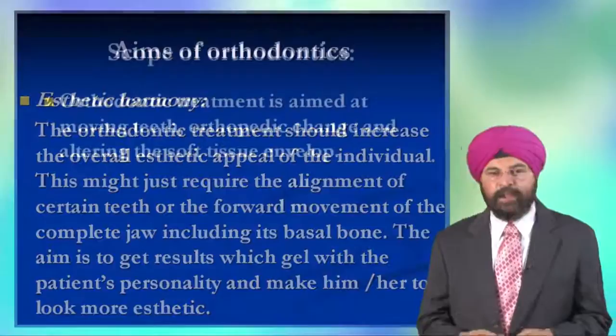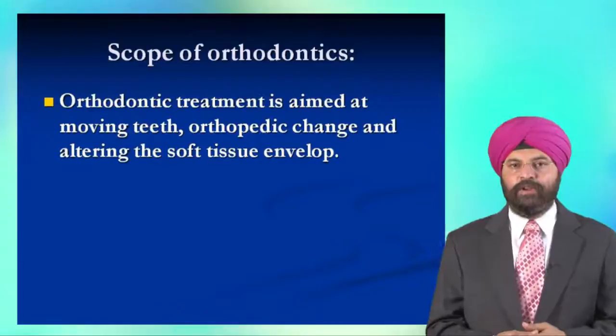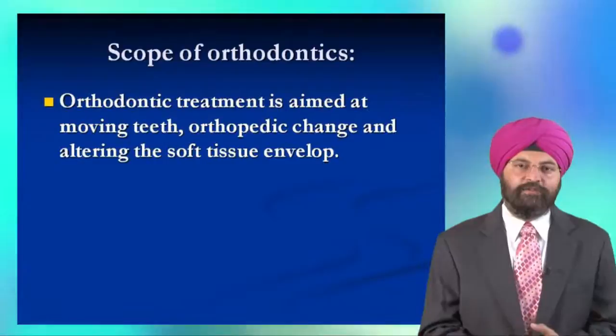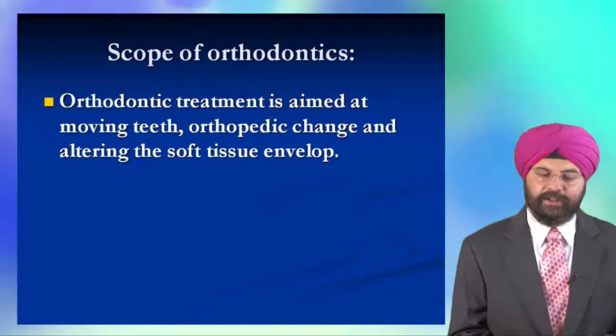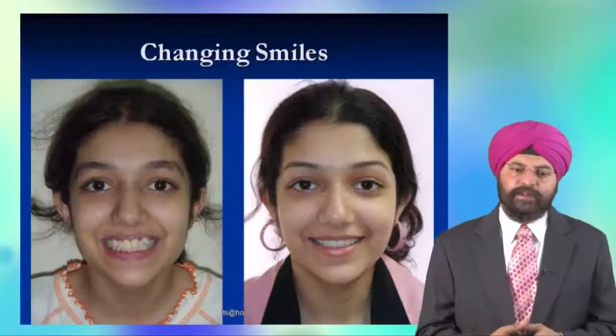The next thing is the scope of orthodontics. Orthodontic treatment is aimed at moving teeth, achieving orthopedic change, and altering the soft tissue envelope. This has to be done together — it is not a singular thing. So don't think that if you move teeth there will be no change in the smile. There will be a change in the smile. If you move jaws, there will be change in the jaws as well as the musculature, and it will affect the TMJ or the joints involved. So basically we are capable of changing profiles and giving better smiles.